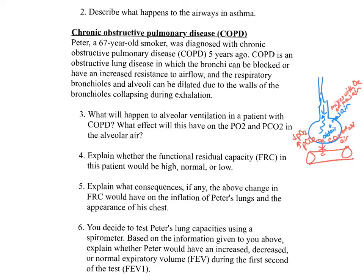Number four: explain whether the functional residual capacity in this patient would be high, normal, or low. The functional residual capacity would be increased, as the alveoli and the respiratory bronchioles are unable to fully empty due to the collapse of the respiratory bronchioles on expiration.